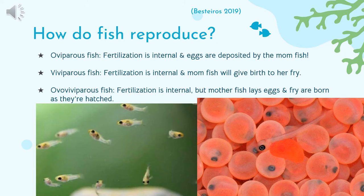In viviparous fish, fertilization is internal, meaning the male fish will fertilize the eggs inside the mom's body, and when the baby fish — or fry — are completely formed, the mother fish will give birth to them. And lastly, for ovoviviparous fish, fertilization is internal, but the mother fish lays the eggs and they are born as they are being hatched — so as the mom is giving birth, the babies are coming out of the eggs.